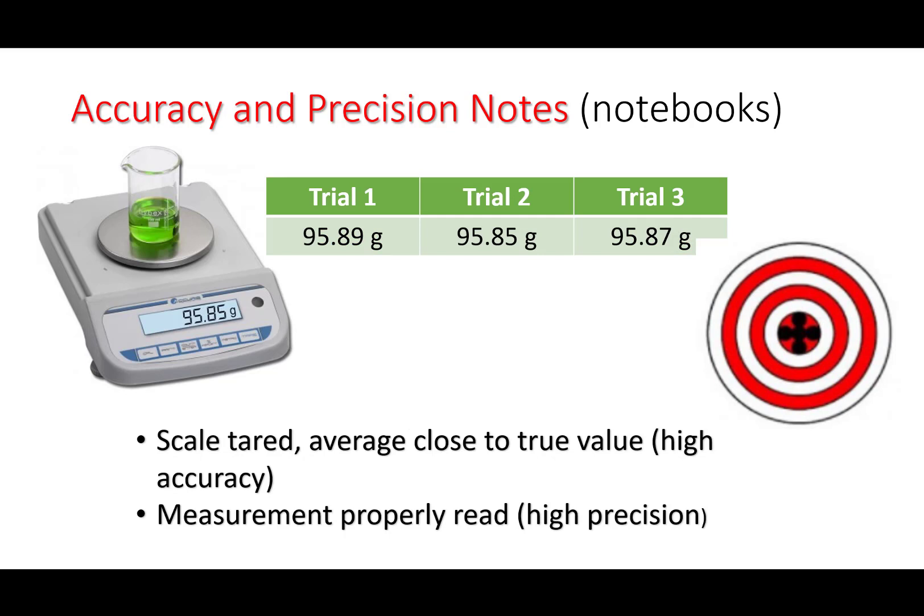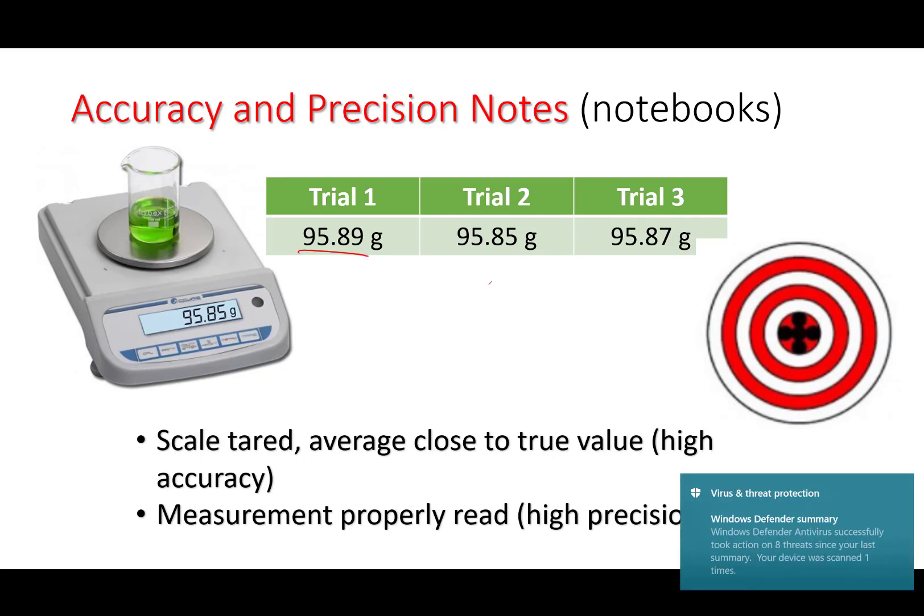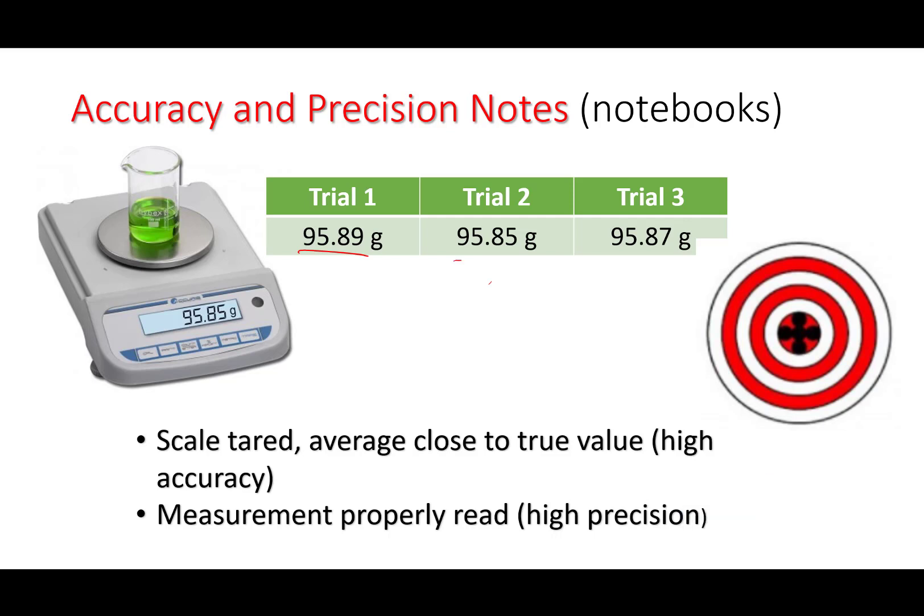And here we have what we want: 95.89, 95.85, 95.87 grams. The scale is tared correctly. We're getting measurements that are close to the true value. We have the correct number of sig figs based on our instrument right here. And, yeah, that's it. Oh, our measurements are consistent. The difference between each of these trials is very small, so these are accurate and precise.